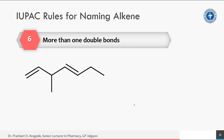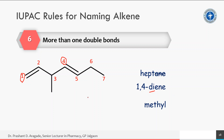For an example containing two double bonds: with seven carbon atoms, the parent chain name is heptane. Replace '-ane' with '-diene' (using 'di' because it contains two double bonds). The double bonds start at carbon one and carbon four, so the prefix is '1,4'. A methyl substituent is at carbon three. The full name of the compound is 3-methyl-1,4-heptadiene.